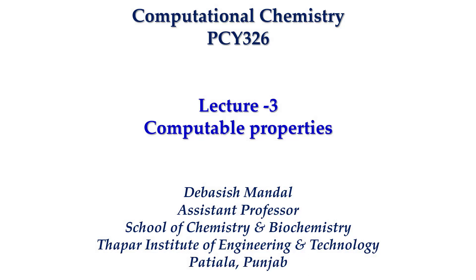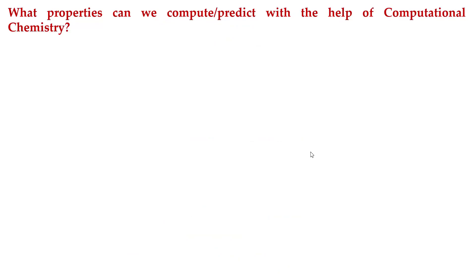Good morning. Let's start lecture number three of our computational chemistry course. In this lecture, we are going to define the computable properties — that is, what are the properties we can compute using computational chemistry. These properties may not be exactly real or experimental values, because what we are doing is solving approximate solutions. Better said, these are properties we can predict.